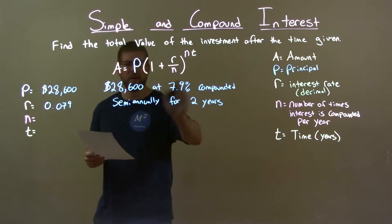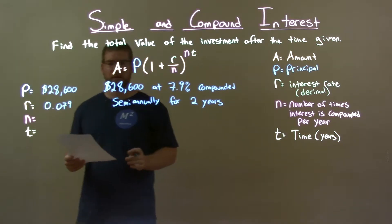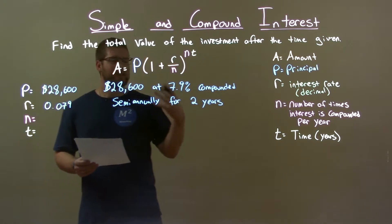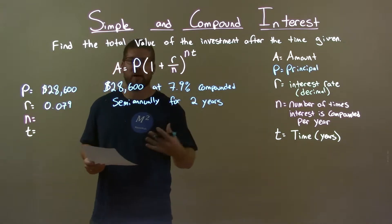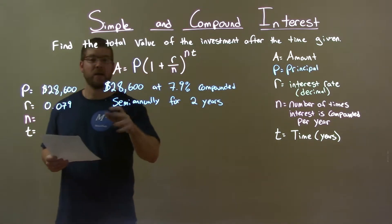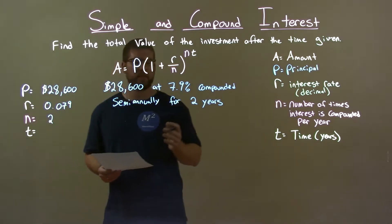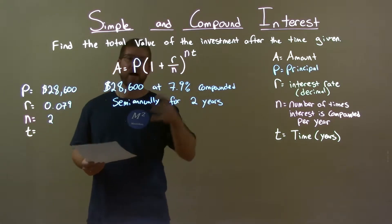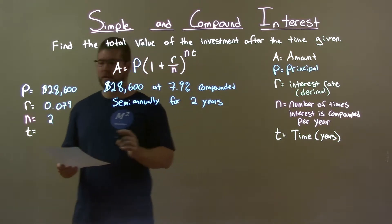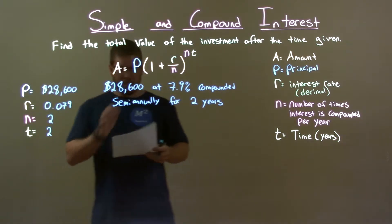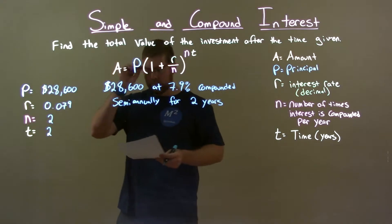Now, compounded semi-annually — our n value — is the number of times we compound in a year. Semi-annually means two times, twice in a year. And our time in years, t, is two years as well.